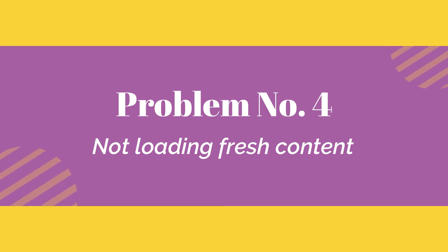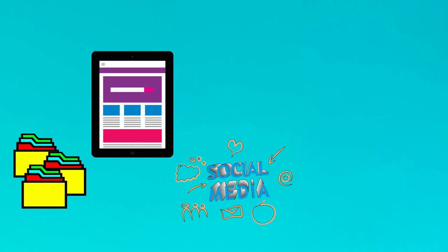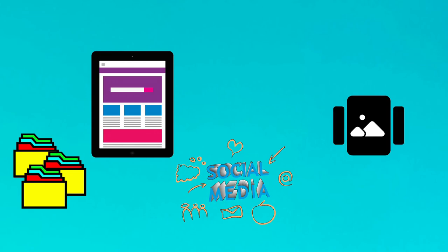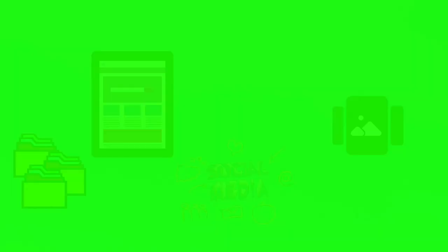Problem Number 4: Not Loading Fresh Content. Sometimes because of old cache data, browsing app or social media app like Instagram stuck on the same feed and would not refresh and load fresh posts.